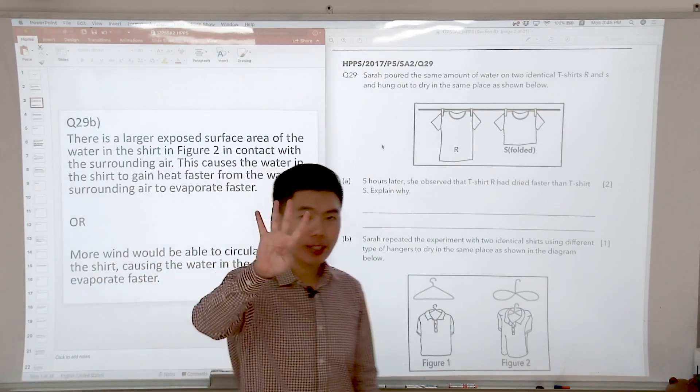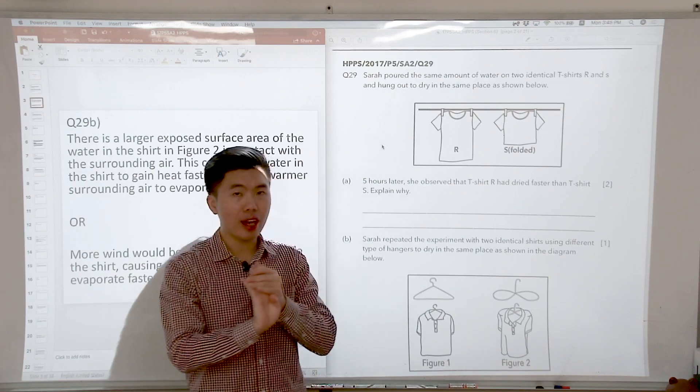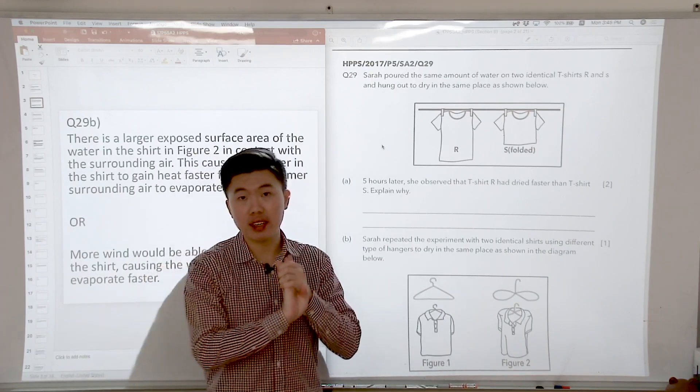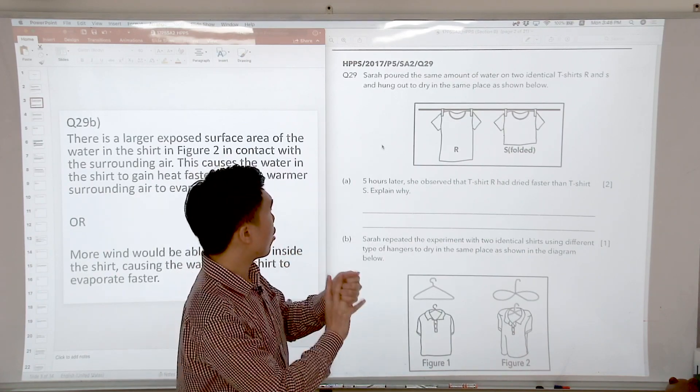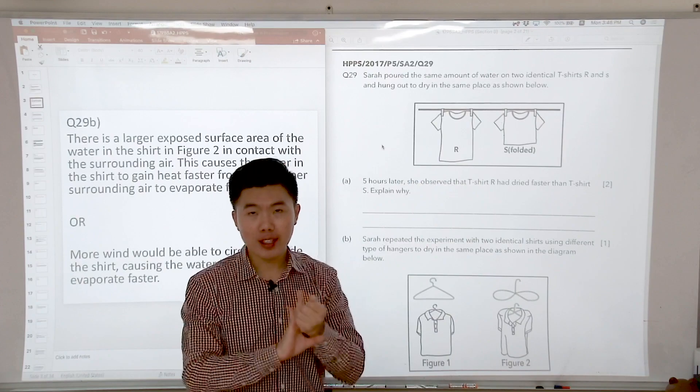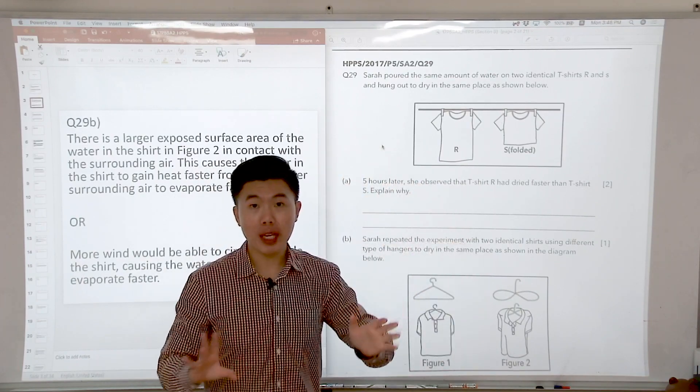Let us recall the factors of evaporation. P is presence of wind, H stands for humidity, A is area of exposed surface, and T is temperature. So if we are going to change the exposed surface area of the t-shirt, the rest of the factors that would affect the rate of evaporation should be kept the same.